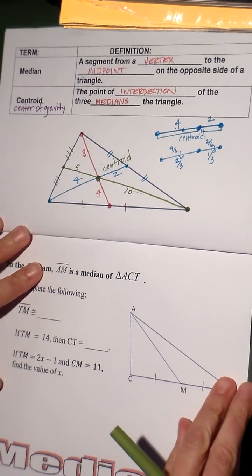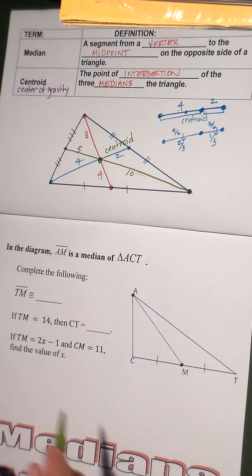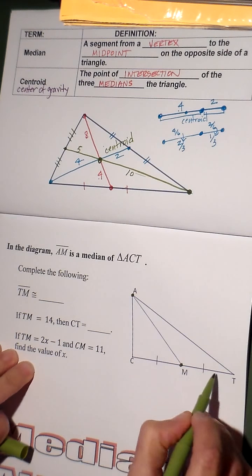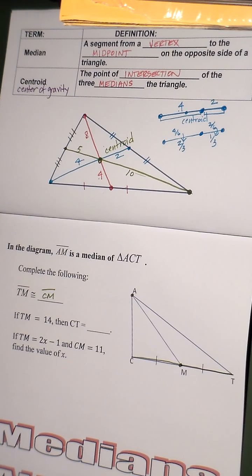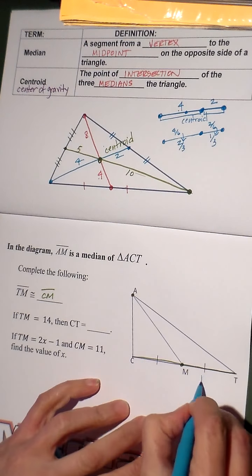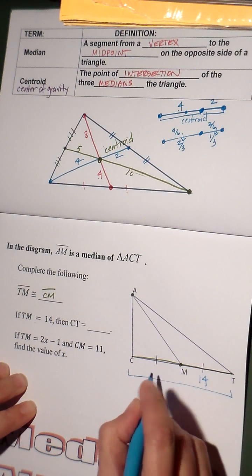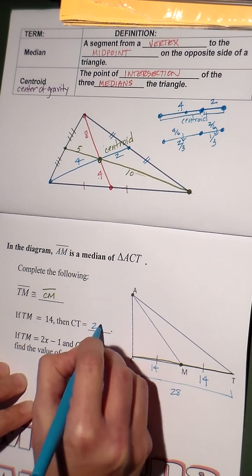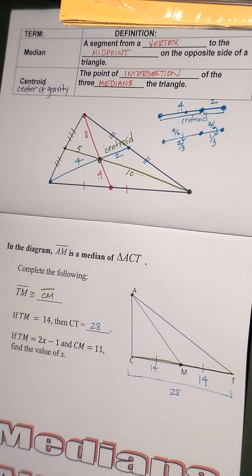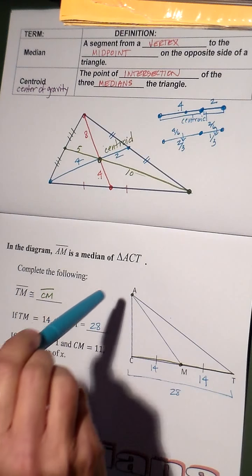So, let's come down here in the diagram. It says AM is the median of triangle ACT. So, I've got midpoint to vertex. What is TM going to be congruent to? Well, if that's the midpoint, TM must be congruent to CM. All right, if TM is fourteen, then CT is what? Well, if TM is fourteen, CT, which is all the way across, would be twice as big because CM would be fourteen, right? So, CT would be twenty-eight because it's a midpoint. We know midpoint because it's median, vertex to midpoint. This has nothing to do with ninety degrees. It's vertex to midpoint. It doesn't cut the angle in half. It's just vertex to midpoint. Cuts the side in half and hits the vertex.